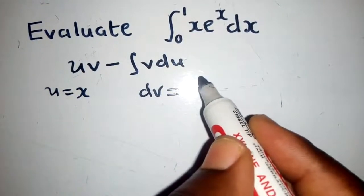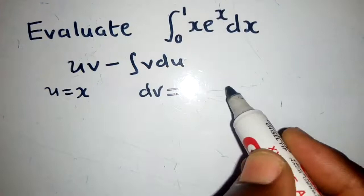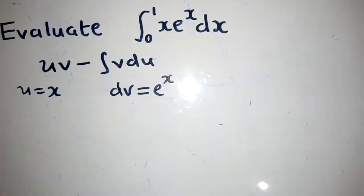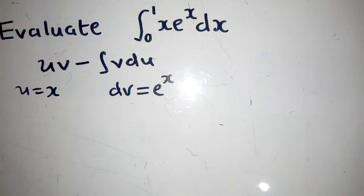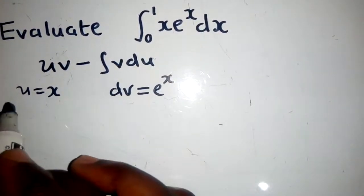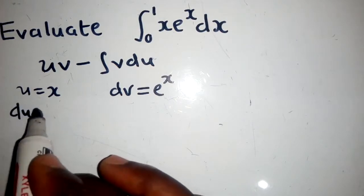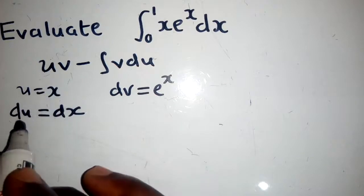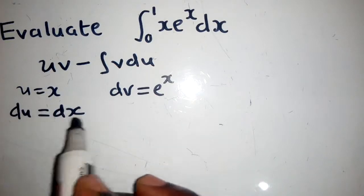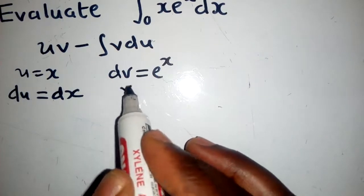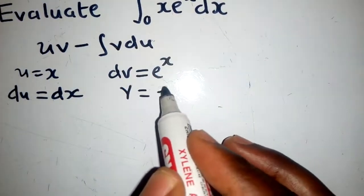dv will be e to the power x, so this is our dv. The next thing we need to do here is to differentiate this side to find du. So du will be equal to dx. Differentiate with respect to x, and then here we integrate with respect to x to find v, which will look like this.